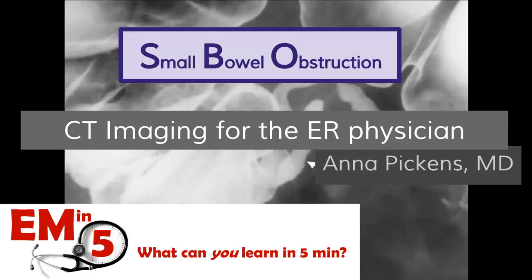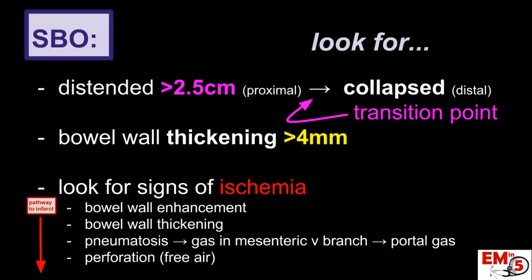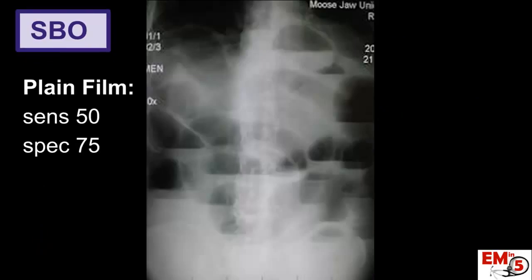This week for EM in 5, we're going to look at different CT findings that you'll see if you're concerned for small bowel obstruction. Things we're going to look for are distension of the small bowel with collapse distally, bowel wall thickening, and I will talk through some different signs of ischemia.